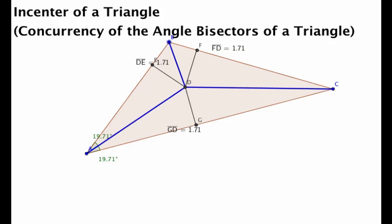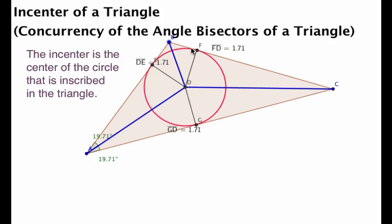So, the last interesting little fact about our incenter is that if this point is equidistant from each one of the sides, we can treat these little line segments as radii of a circle. Because as we know, a circle represents all points equidistant from a center point, which would be D.